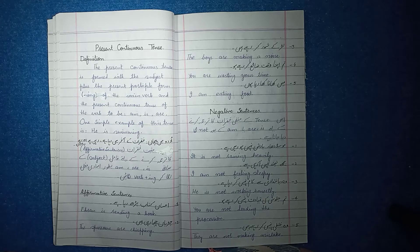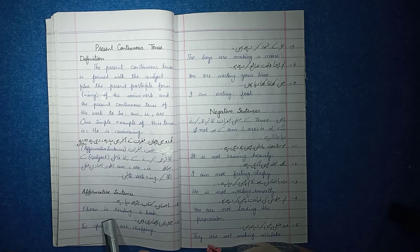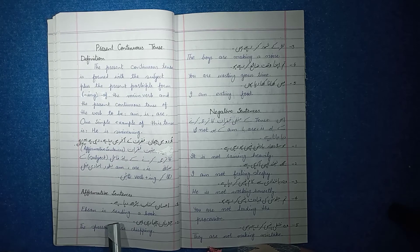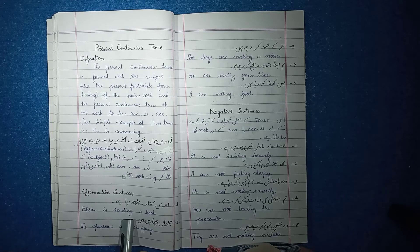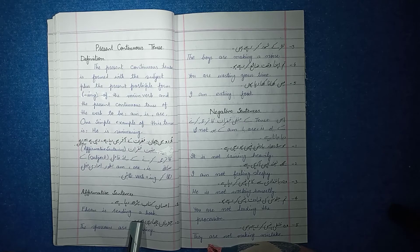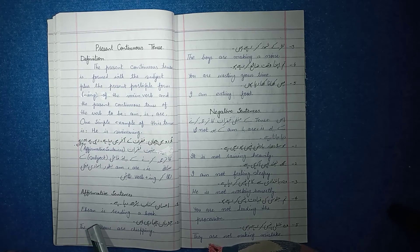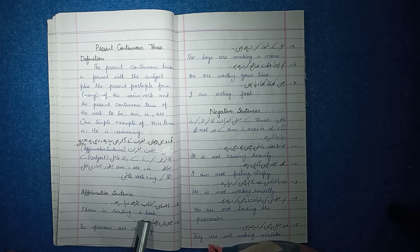Affirmative sentences. For example: 'He is reading a book.' Here 'he' is the subject, 'is' is the helping verb, 'reading' is the present participle and main verb, and 'a book' is the object — where 'a' is the indefinite article.